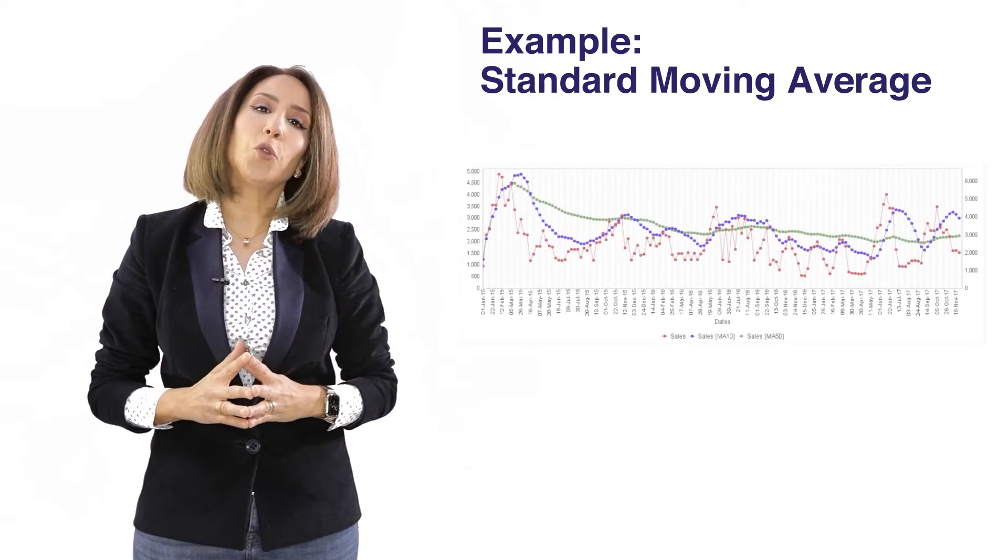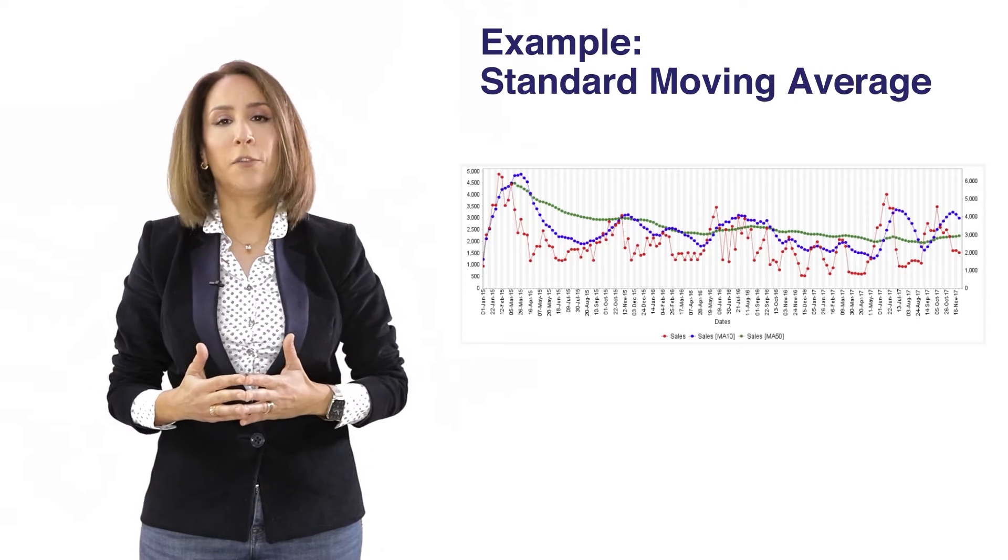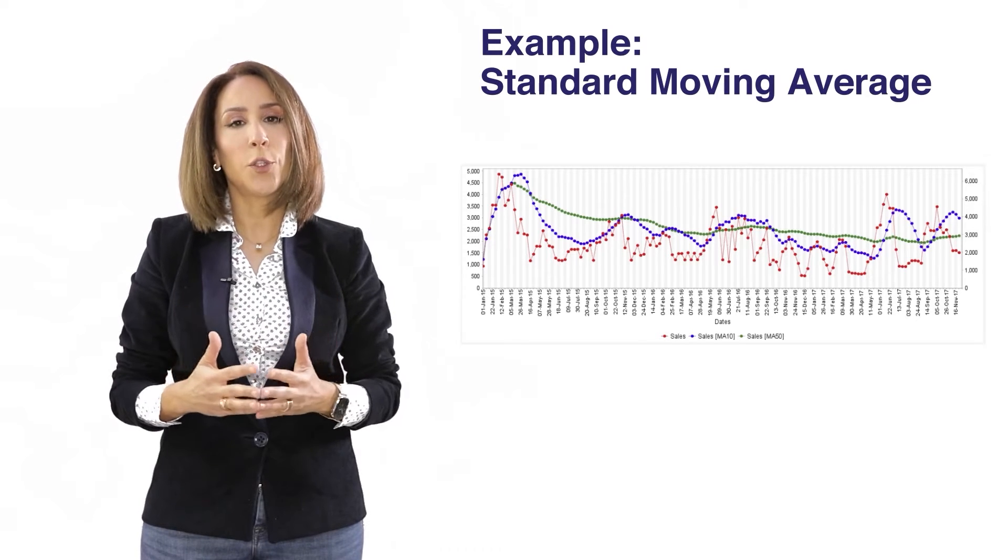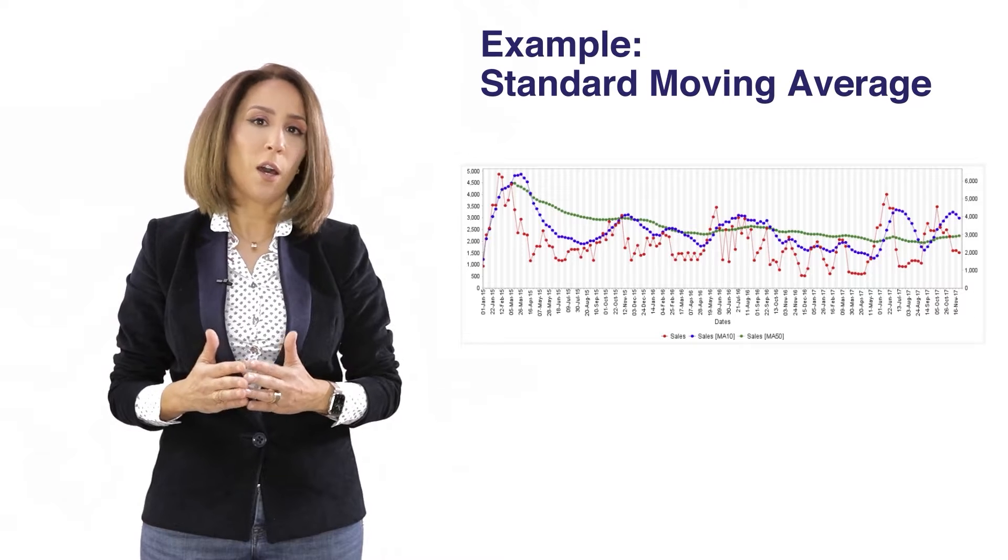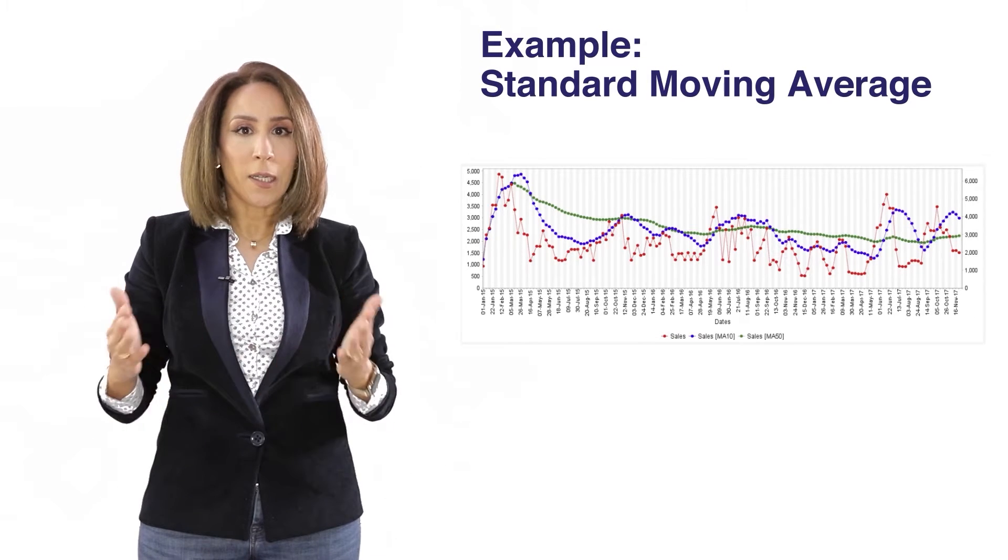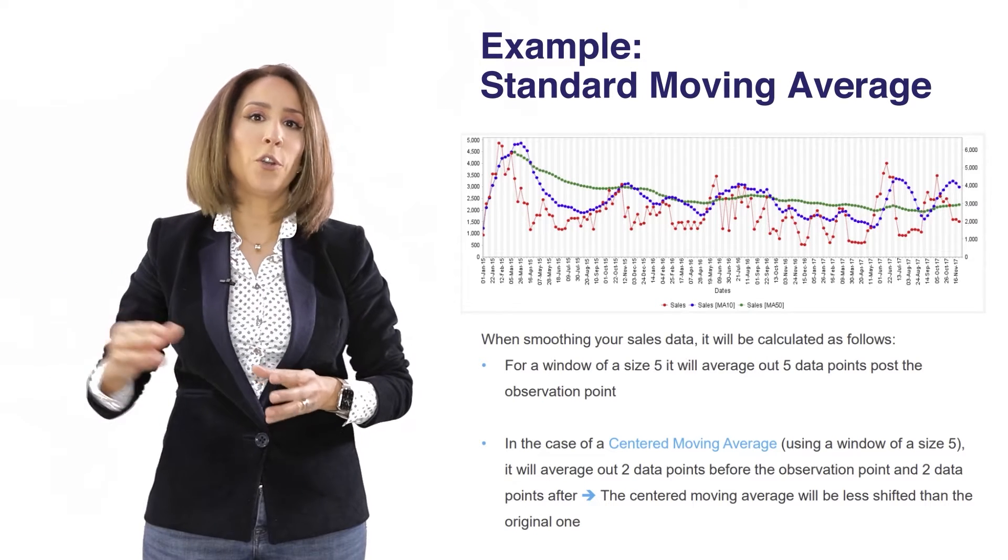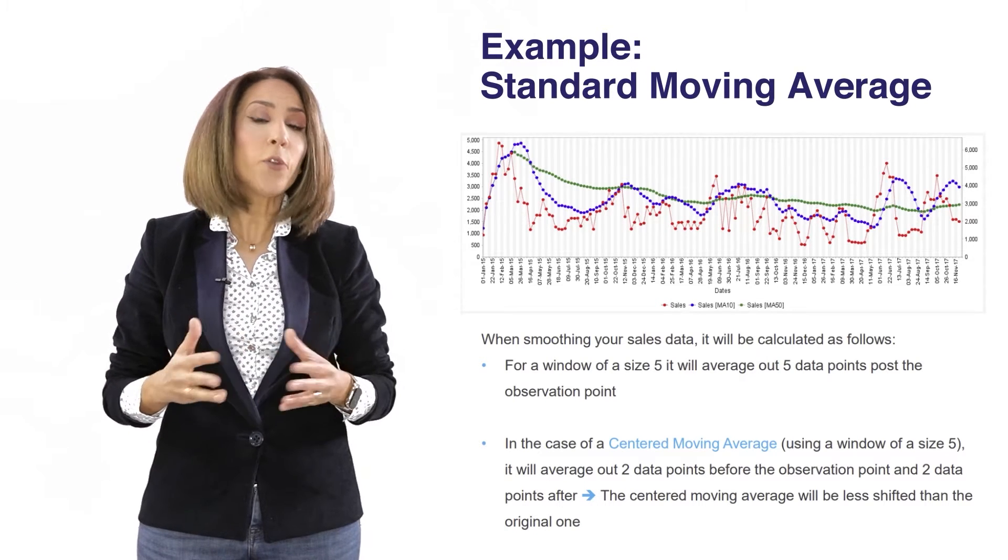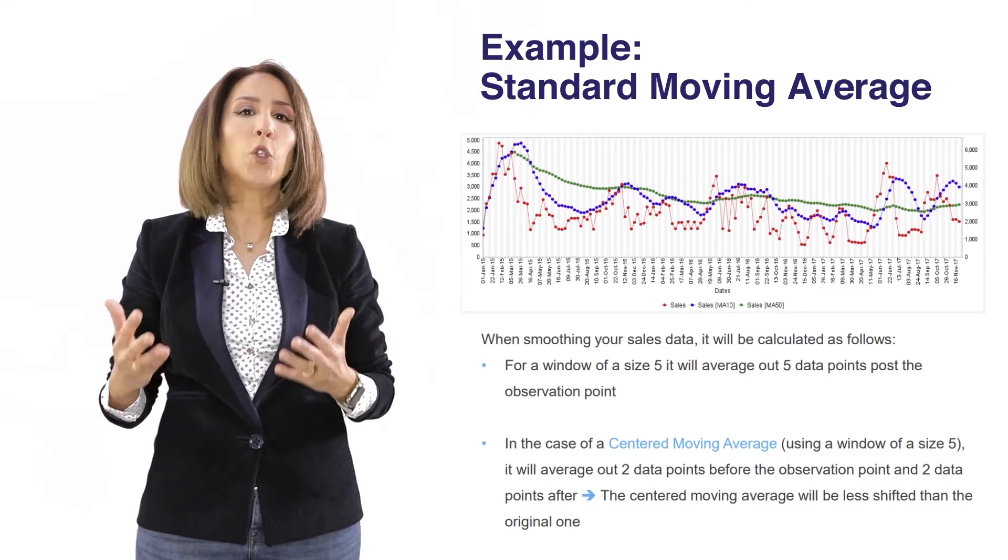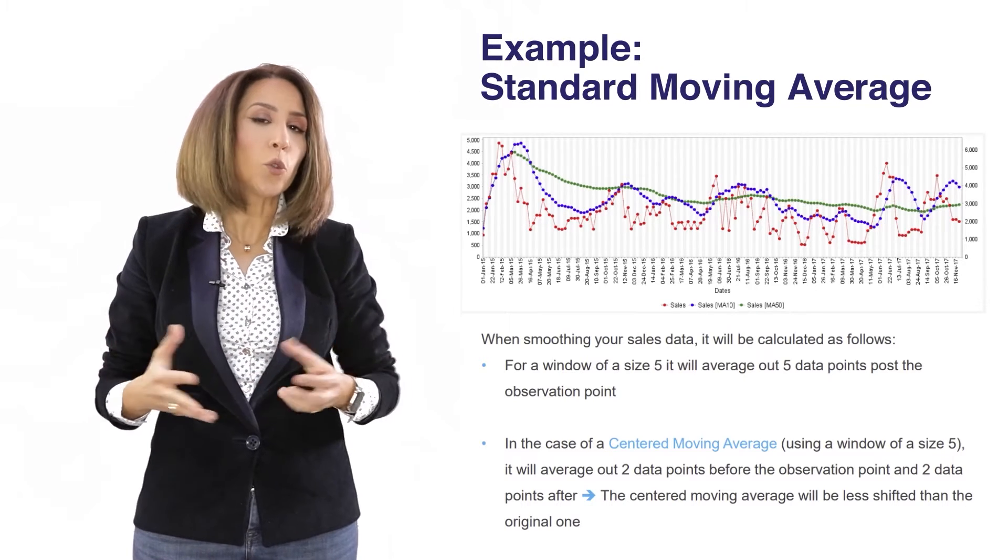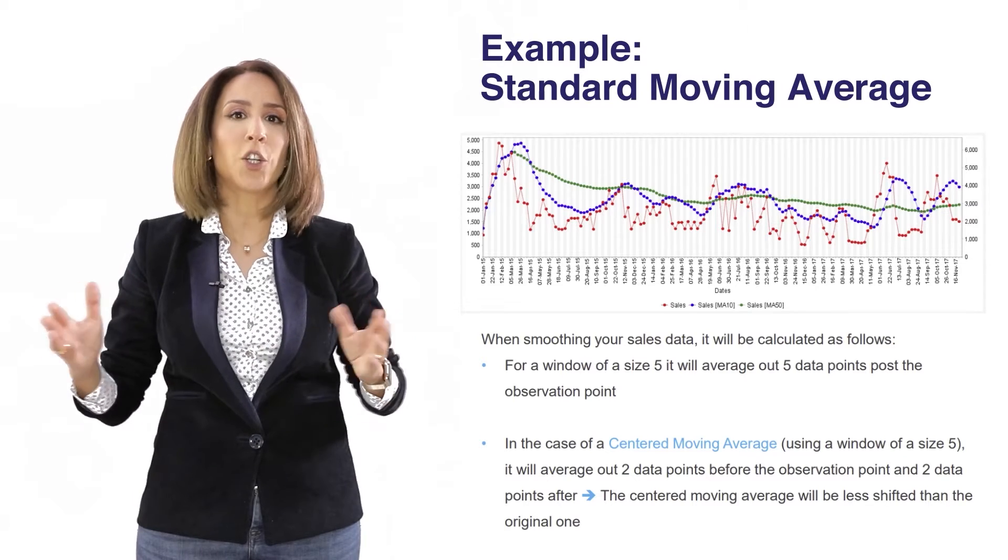For example, we want to smooth out our sales data, and here we have created two versions of the moving average. One with a sliding window of 50 periods and the other with a sliding window of 10 periods. You can clearly see that when you opt for a large window you can obtain a smoother version of your data set. The choice of how large the window is will depend on what you want to get as an output. If you really want to smooth out your data well, then go for a large window.